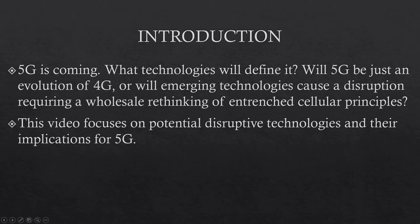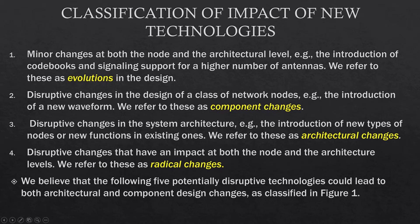Here, 5G is coming. What technology will define it? Will 5G be just an evolution of 4G, or will emerging technologies cause a disruption requiring a wholesale rethinking of fundamental cellular principles? This video focuses on potential disruptive technologies and their implications for 5G. First, let us classify the impact of new technologies. Minor changes at both the node and architecture level — for example, the introduction of code books and signaling support for higher number of antennas — we refer to these as evolutions in the design. Second, disruptive changes in the design of a class of network nodes — for example, introduction of a new waveform — we refer to these as component changes.